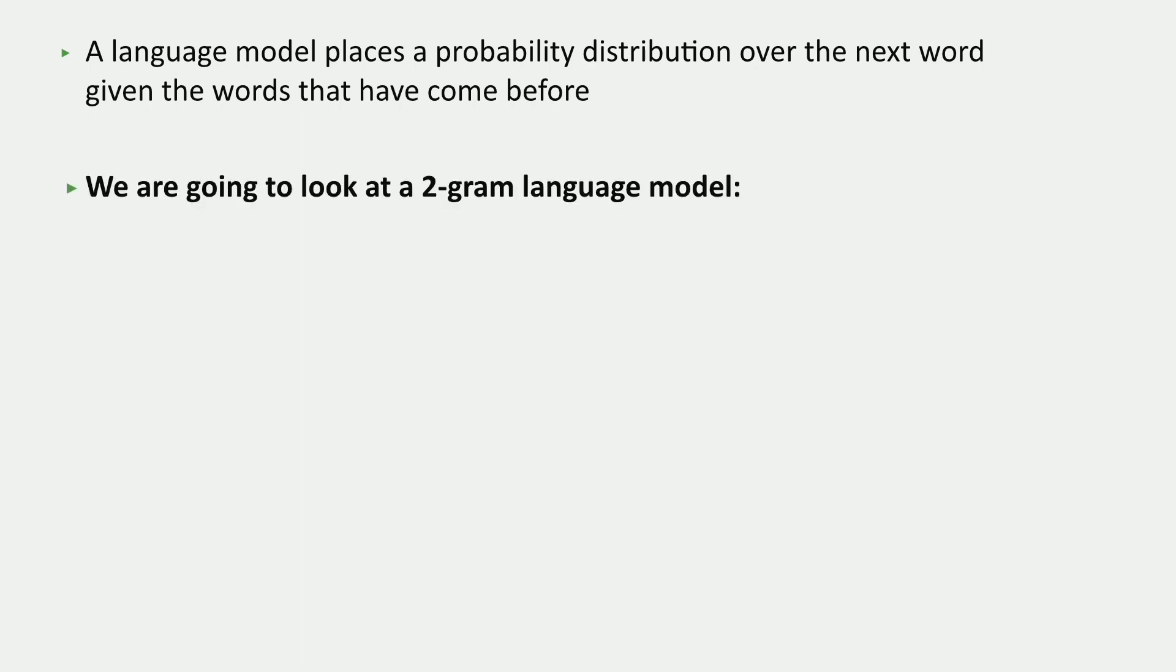Instead, we're going to look at a much simpler model, which is called a 2-gram language model or a bigram language model. And what this model does is it's going to think about the probability of each word in a sentence conditioned only on the word that comes before. And I'm going to explain what that means.